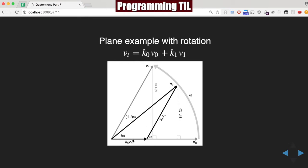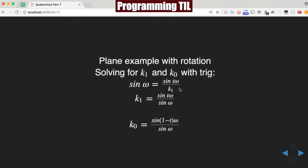And we need to compute k of 0 and k of 1, which we can do looking at these right triangles here with very simple trigonometry.